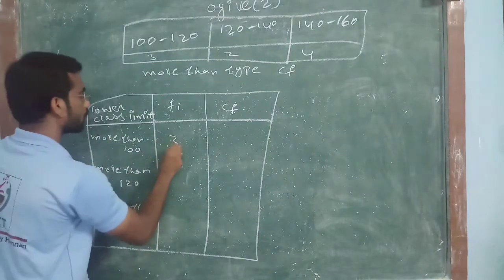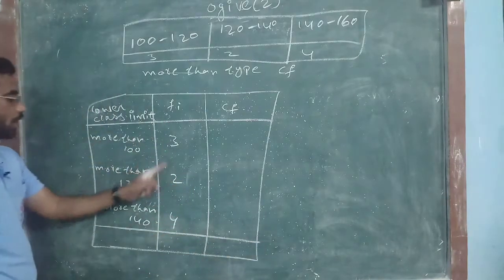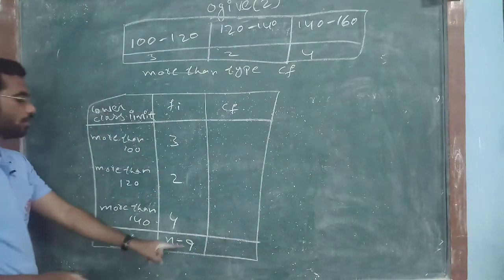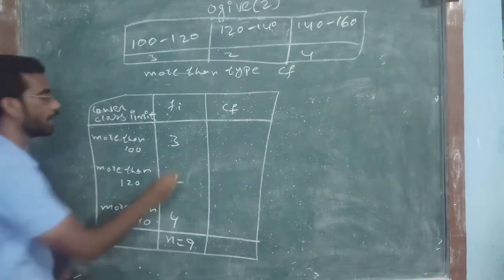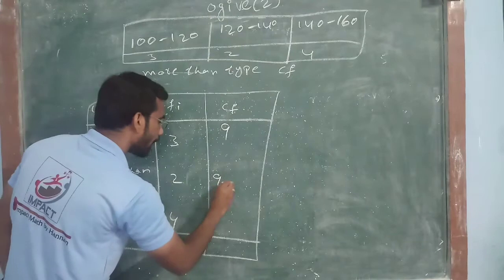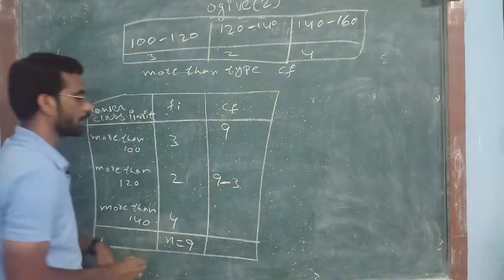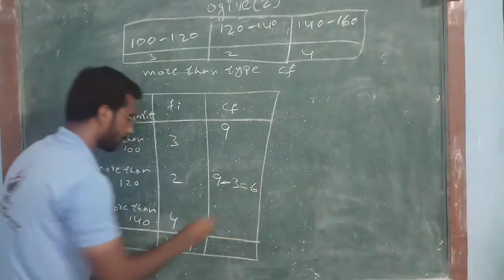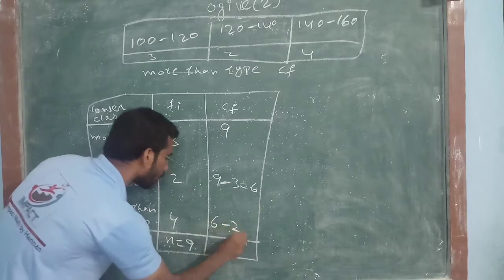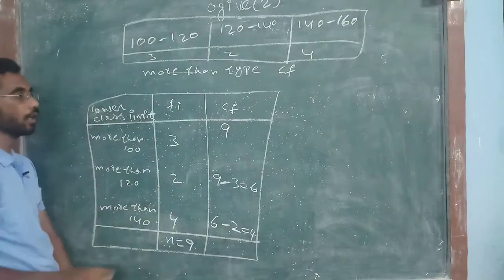Frequency? 3, 2, 4. Total frequency is how much? 3 plus 2 is 5, 5 plus 4, N is equal to 9. Now, what we have to do? We should write the 9 as it is. This one, 9. Next, 9 minus 3. How much it will be? 6. Next, 6 minus 2 is equal to how much? 4. This 4, 4 equal.